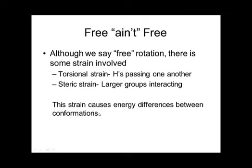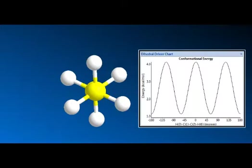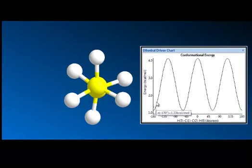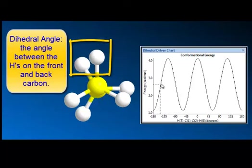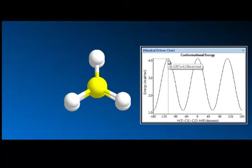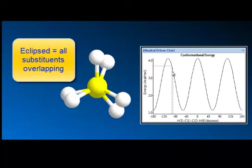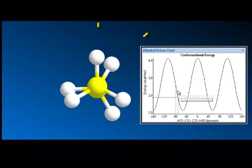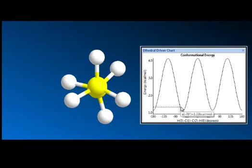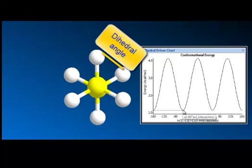When you have this type of strain it causes energy differences between conformations. Notice the hydrogens passing one another — that costs energy, expressed on what we call a potential energy surface. The highest peaks are high energy, the lowest are low energy. As I go up in energy, the dihedral angle between the two hydrogens is decreasing, and at the highest point everything is eclipsed. As I decrease in energy, that dihedral angle increases.